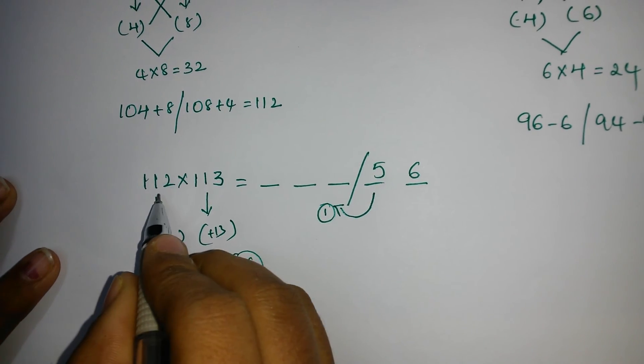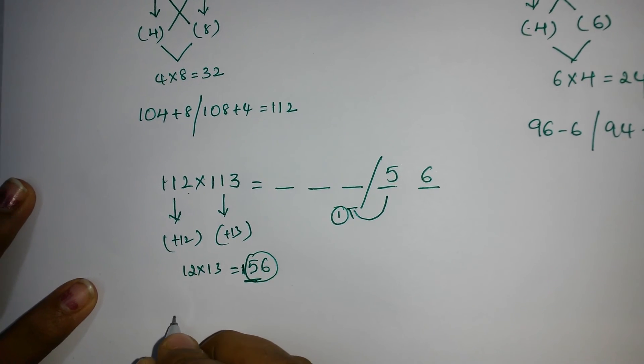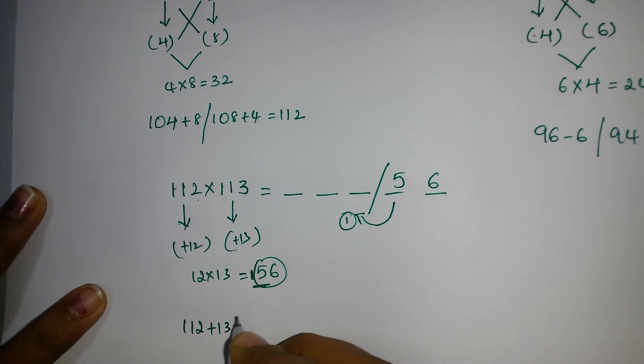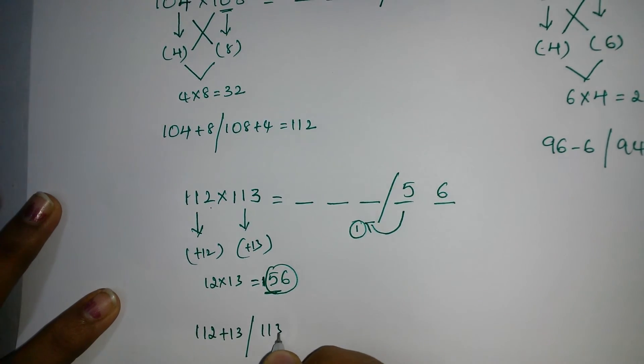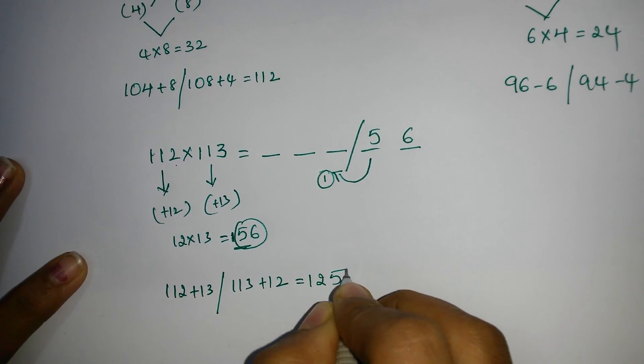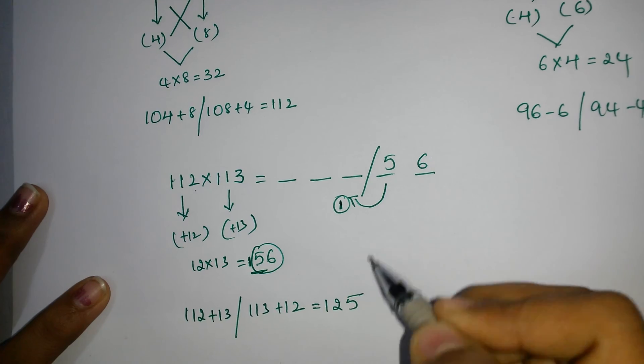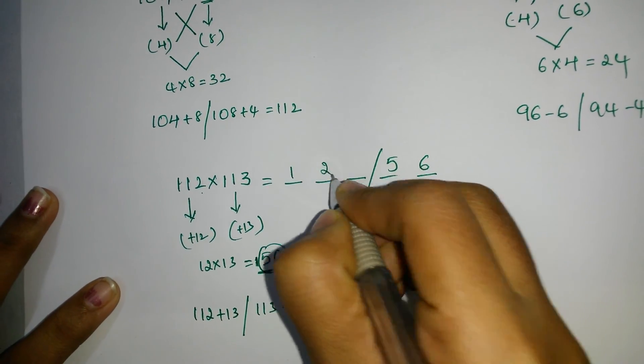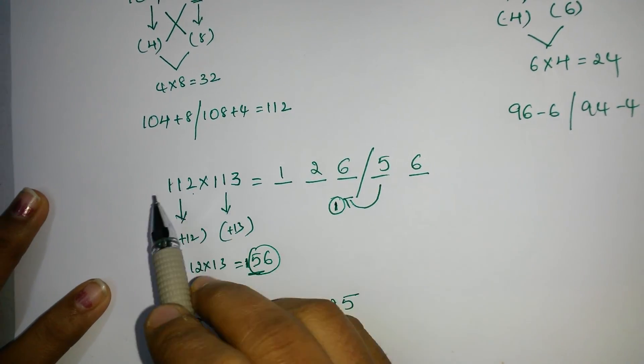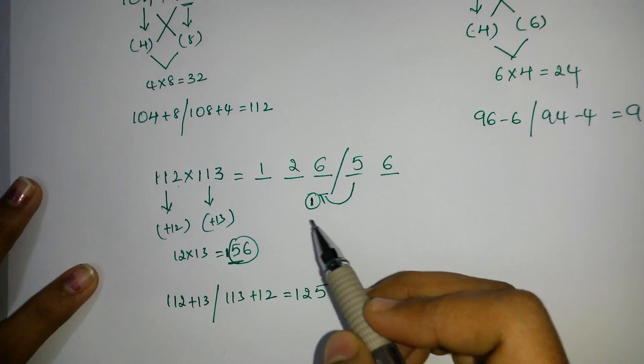Now, see here. 112 plus 13 and 113 plus 12. 112 plus 13 or 113 plus 12. When you add these 2, you will get answer as 125. And here we have already carry 1. So 125 plus 1 is 126 is the answer. So 112 into 113 is equals to 12656 is the answer.